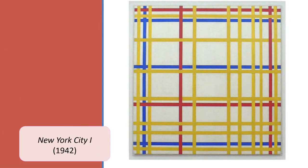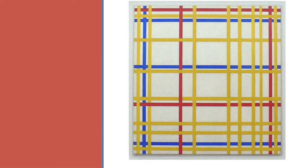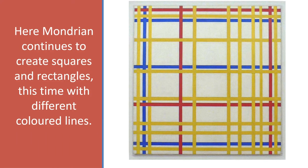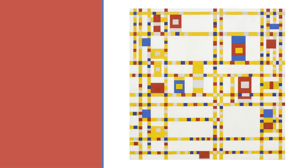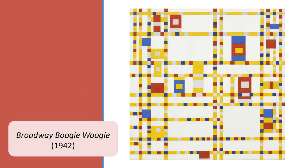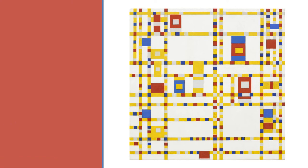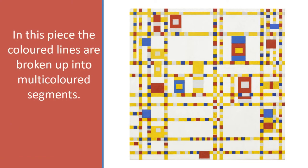And in this piece from 1942, Mondrian continues to create rectangles and squares, but this time using different coloured lines. And in this piece, also from 1942, Mondrian has continued to experiment with his coloured lines, which are this time broken up into multi-coloured segments.